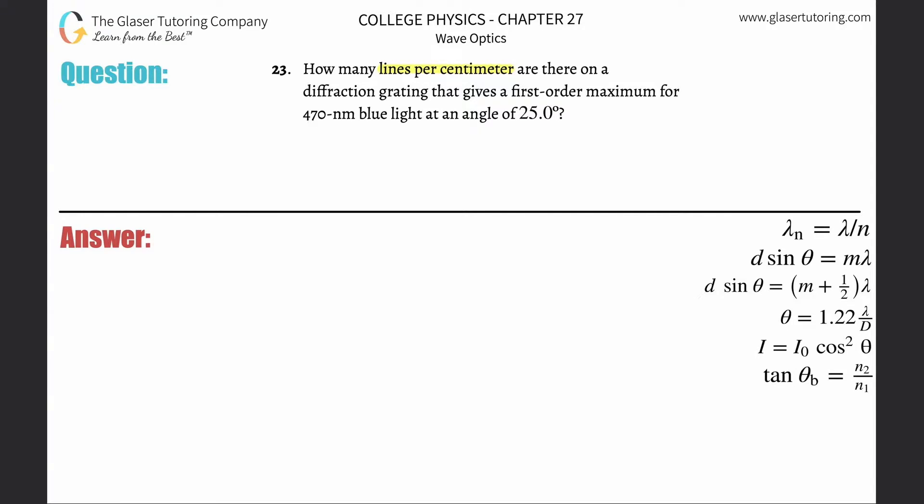Number 23: How many lines per centimeter are there on a diffraction grating that gives a first-order maximum for 470-nanometer blue light at an angle of 25 degrees? So first of all, given the information, I know what the question is.